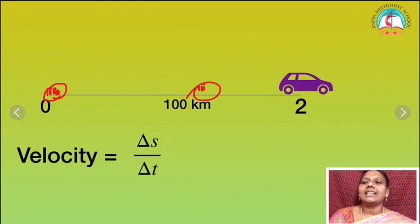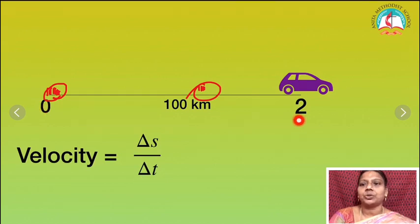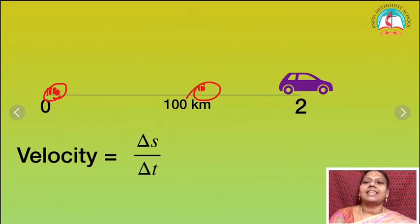Delta s is the smallest displacement and delta t represents the smallest time taken. So it may start from zero up to 2 hours, but we are considering only the smallest portion. That is called derivatives.